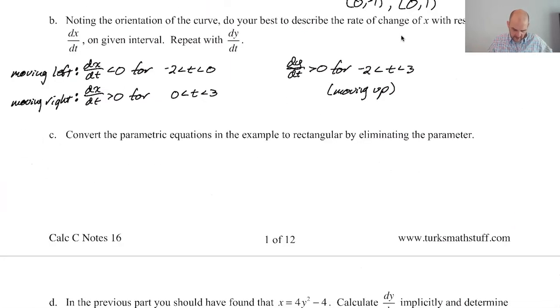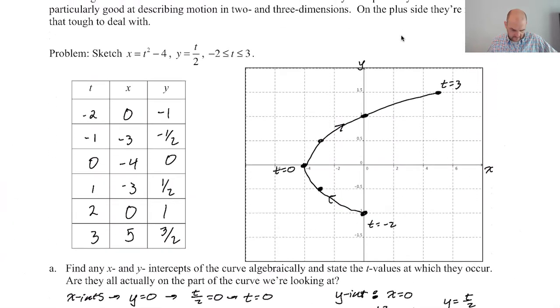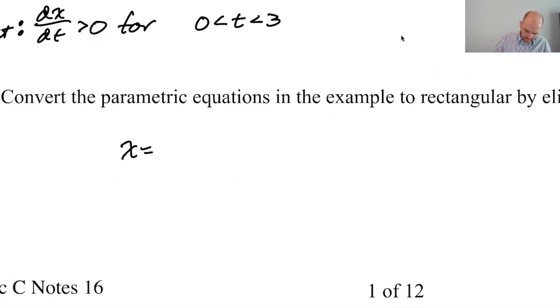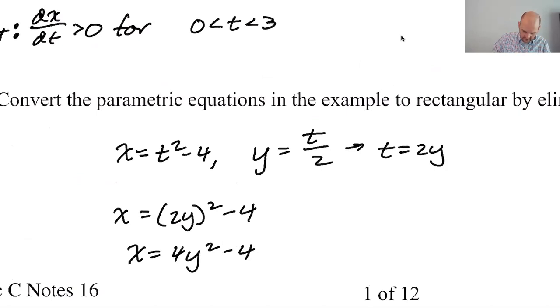Convert the parametric equations to rectangular by eliminating the parameter. So x is t squared minus 4, and y is equal to t over 2. So that means that t equals 2y. So x is quantity 2y squared minus 4. So x is 4y squared minus 4. That's it. We eliminated the parameter. There is no more. And you can see, it's a parabola that opens to the right. So you would expect it to look like this.